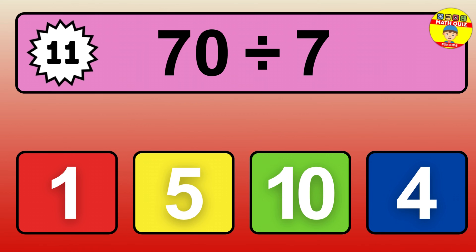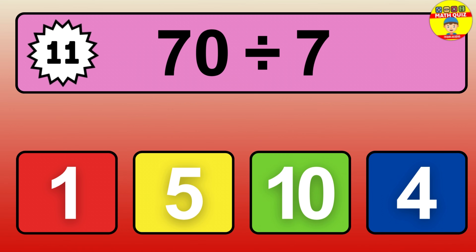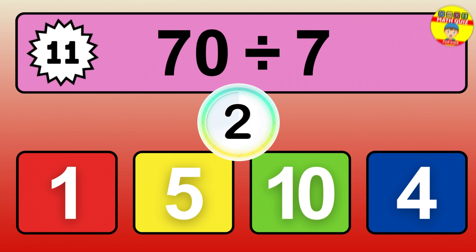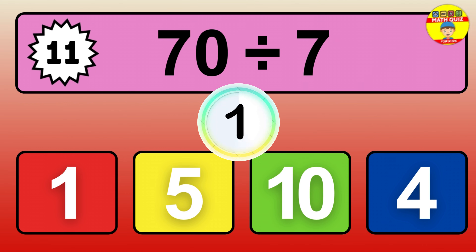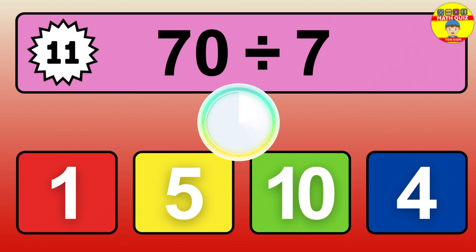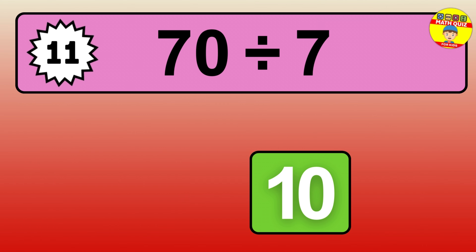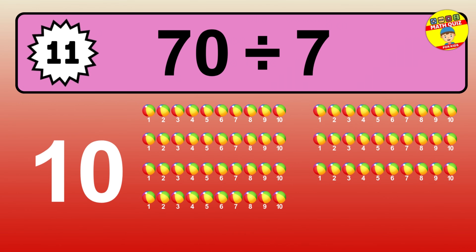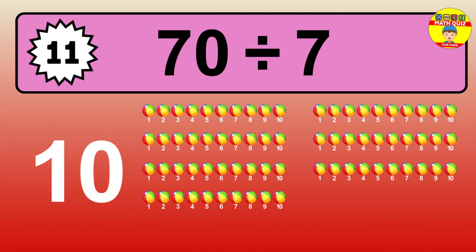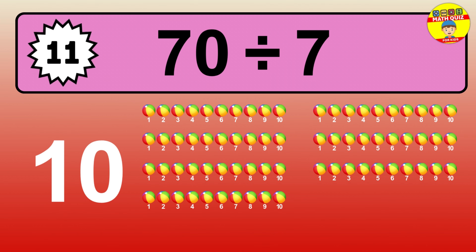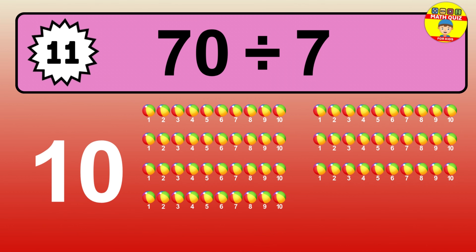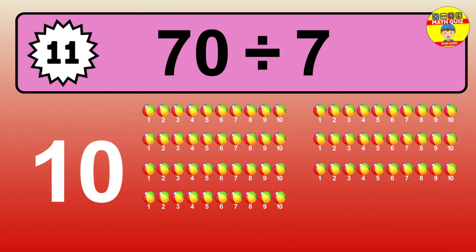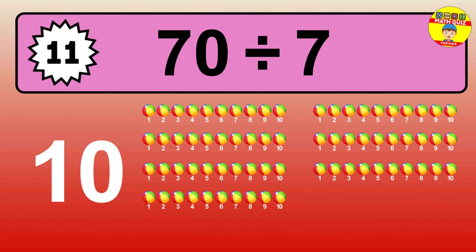What is 70 divided by 7? Picture this. You have 70 objects to divide into groups of 7. How many groups can you make? Let's think about it. Ready to find out? Let's break it down. Let's imagine you have 70 objects. Can you picture them lined up?